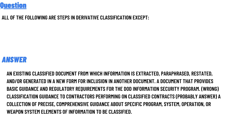A document that provides basic guidance and the regulatory requirement for the DOD information security program. Wrong classification guidance to the contractors performing on the classified contracts. A collection of precise, comprehensive patterns about the specific program systems, operations, or weapon systems elements of the information to be classified.